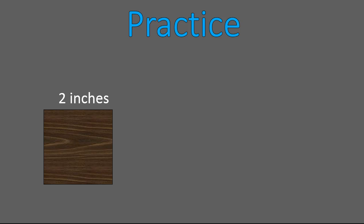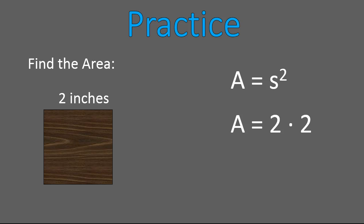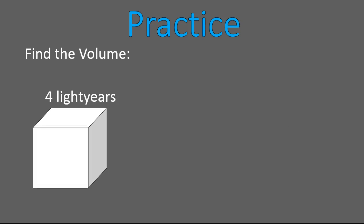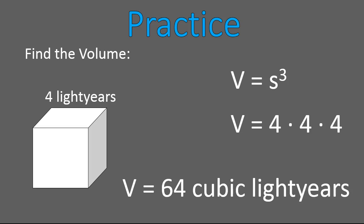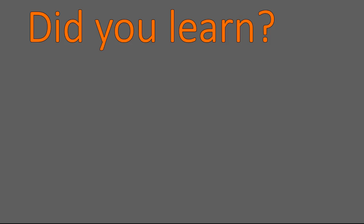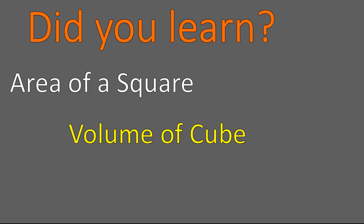Now it's time to practice both things we've learned. First, calculate the area of this square. Area of a square is the side squared — side times side — which is two times two: four square inches. For our practice with volume, calculate the volume of this cube. Volume is side cubed — side times side times side — so the volume is 64 cubic light years. Light years is a very, very long distance. Did you learn the area of a square, how to calculate the volume of a cube, and practice? I hope that lesson was helpful. Have a wonderful day.